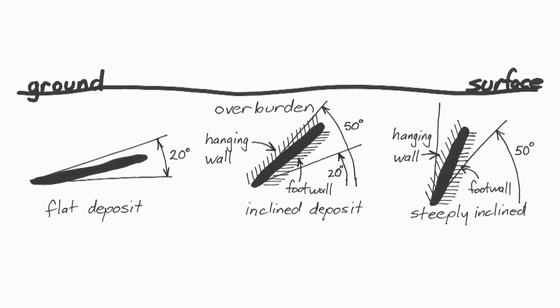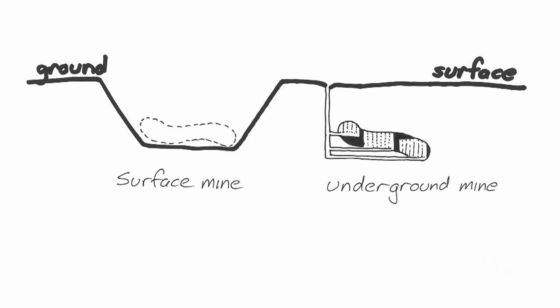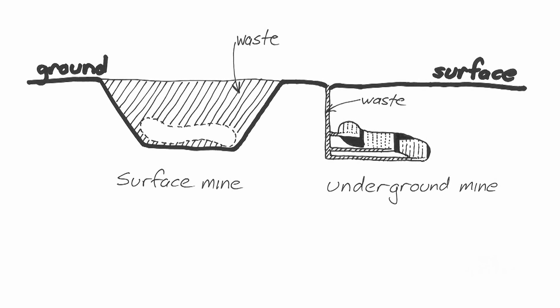A hanging wall is the rock that forms the upper boundary of an inclined ore body, and the foot wall is the rock that forms the lower boundary of an inclined ore body. The two ore bodies shown in the figure could be mined either by surface mining or by underground mining. A surface mine is a mine where the deposit is excavated directly at the ground surface, or else overburden is removed to expose the ore at the surface. An underground mine is a mine where the deposit is worked from excavations beneath the ground surface. As you can see in the figure, surface mines generally produce more waste than underground mines.